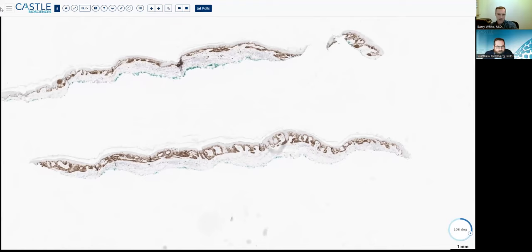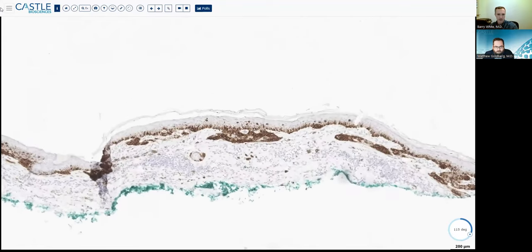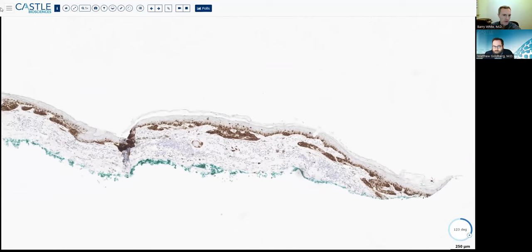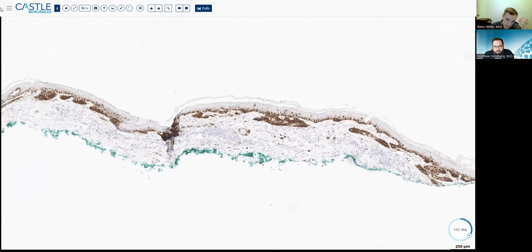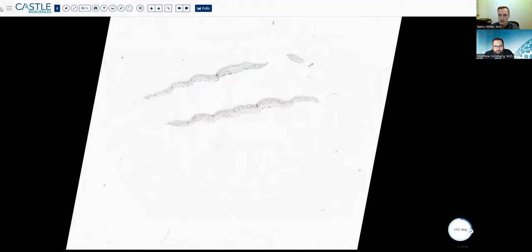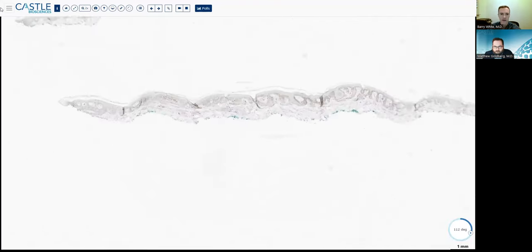The melanoma stain here, conversely, it doesn't look like we can see much in the way of a pagetoid spread or anything like that. It's been finding mitoses, even though it's predominantly junctional. There were a few cells in the dermis. So again, melanoma here, confirming what we've seen by H&E. And that is a very broad, predominantly junctional lesion. But you do have some areas of cells that look like they may not be connected in the dermis.